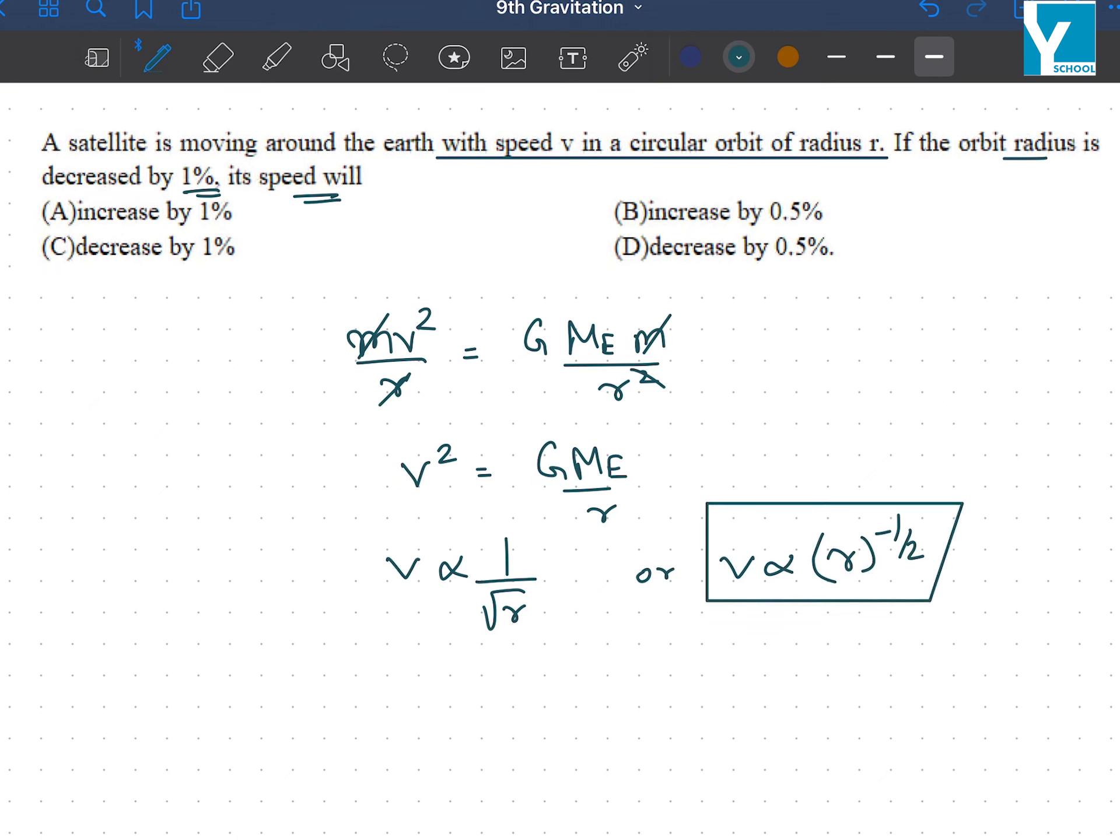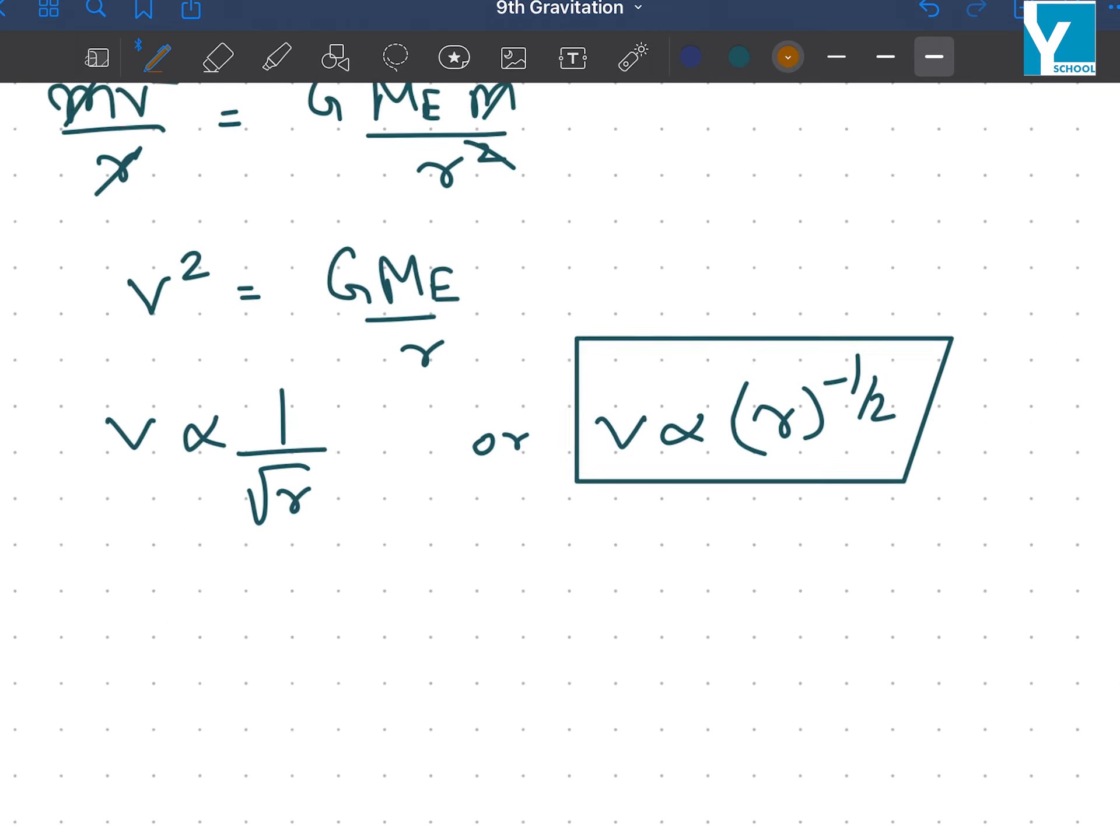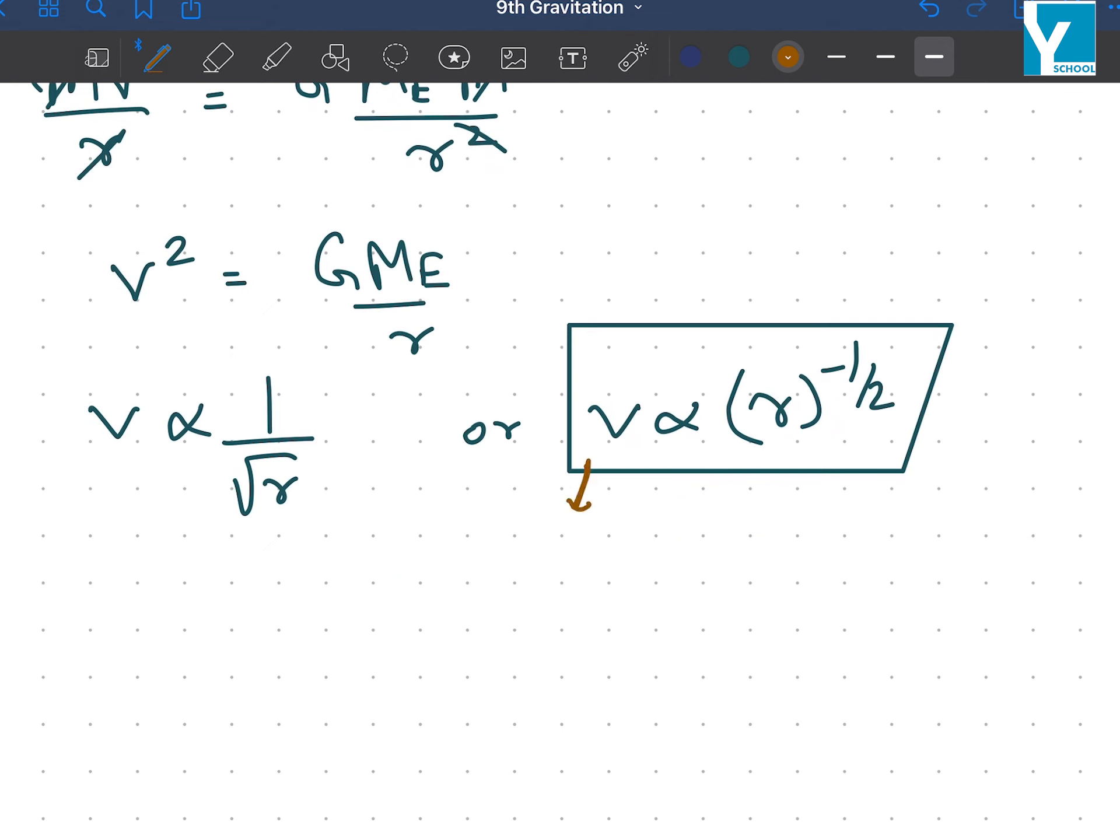So what has been asked is, if the orbit radius is decreased by 1%, its speed will? So you see, we can write it in a different form. We can write it as delta v upon v. This is error analysis and a very effective way of solving these types of equations. Delta v by v is going to be equal to minus 1 by 2 delta r by r.